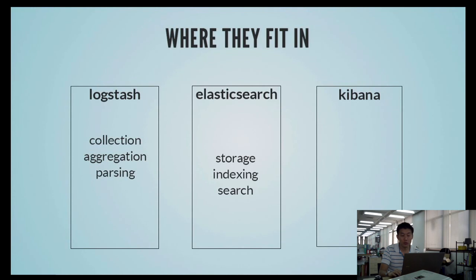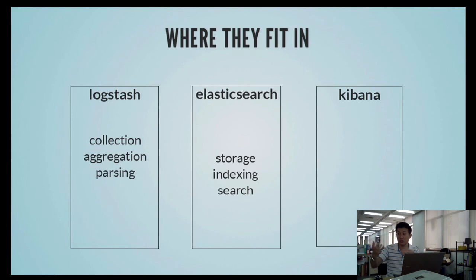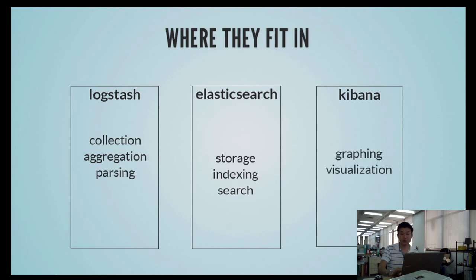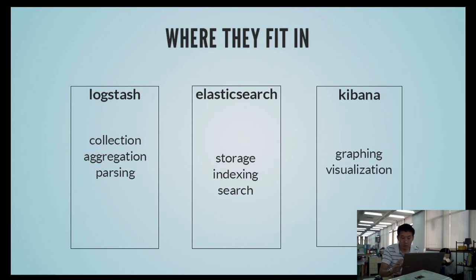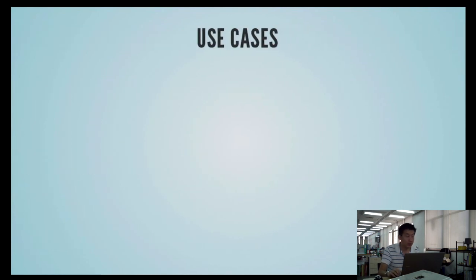Elasticsearch handles the storage, indexing, and search — that's the whole data store: clustering, replication, all of that happens in Elasticsearch. And Kibana is the UI: it shows you the graphs, the visualizations, the dashboards. That's how I see it.